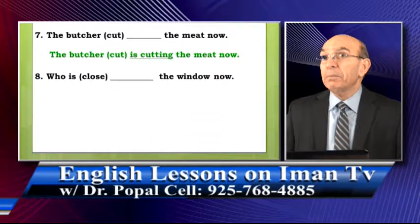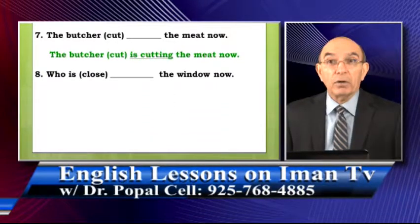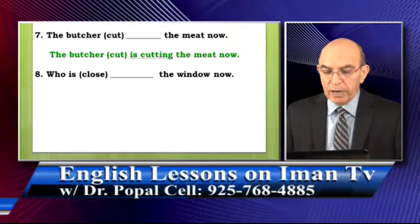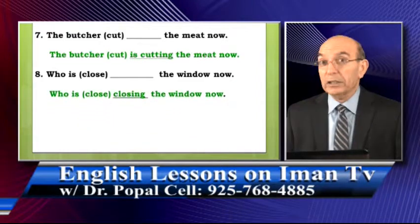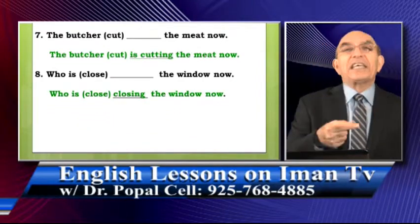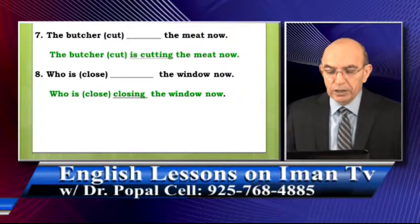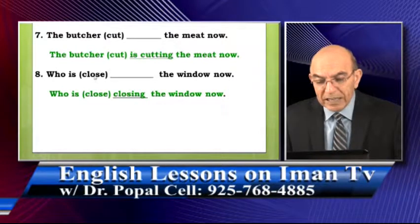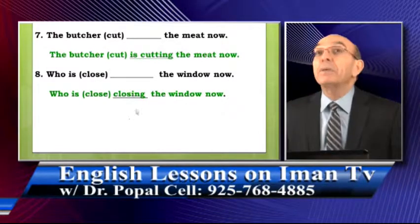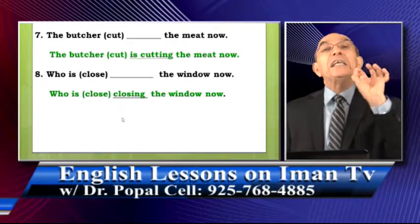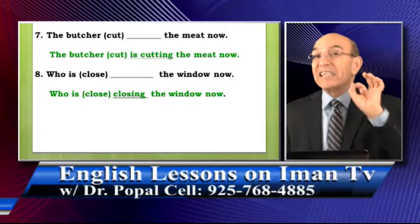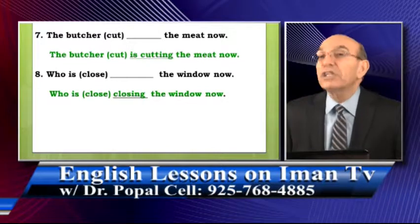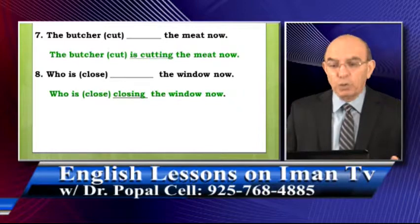Sentence number eight: 'Who is closing the window now?' When you write it, remember that 'close' ends with 'e,' so this 'e' disappears when you add '-ing.' The correct form is 'closing' — not 'closeing.' You have to delete the 'e' when you add '-ing.' This is a firm rule — please learn it and practice it when you write.